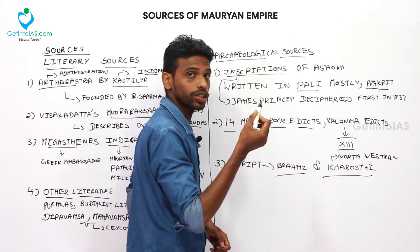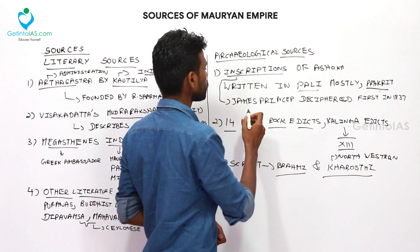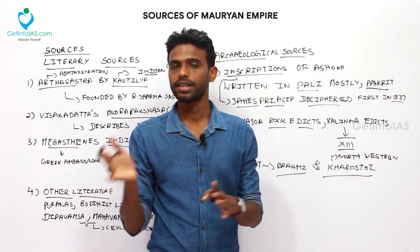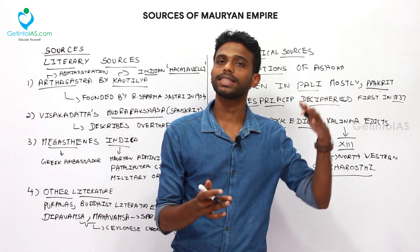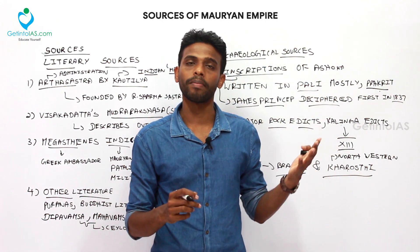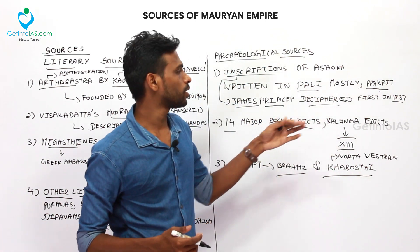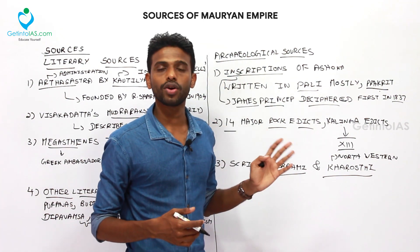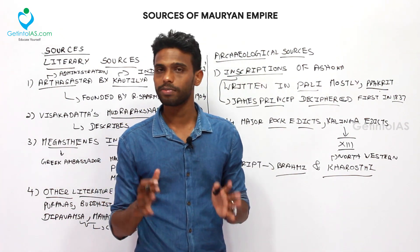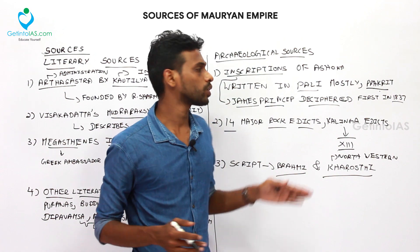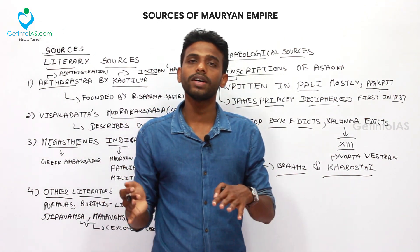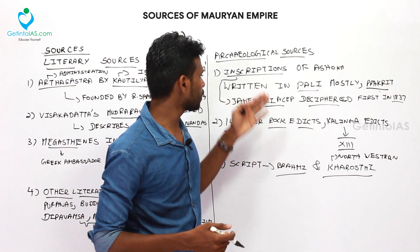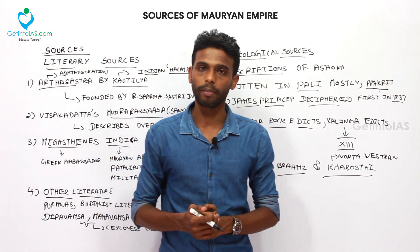These inscriptions were first deciphered by James Princep in 1837. Since we couldn't understand the language or script used at that time, James Princep was the first to convert that script and make it understood for common people. This was also the first script of India to be successfully deciphered, as the Harappan script had not been deciphered convincingly. These are the archaeological sources during the Mauryan Empire, along with the literary sources, which gave archaeologists many important details.